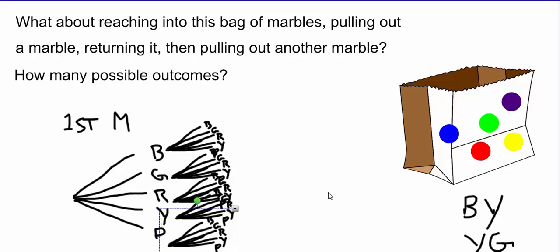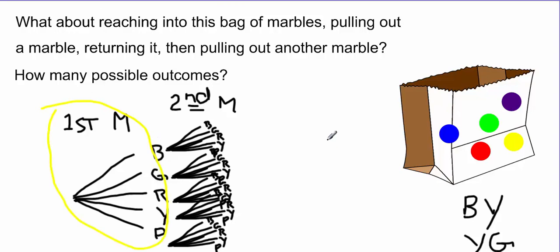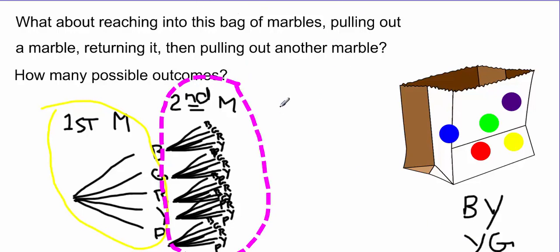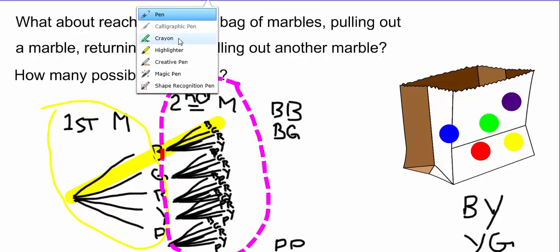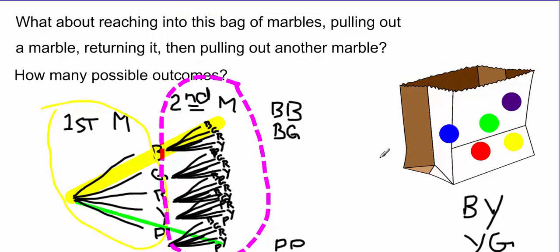Now we can see the total number of possibilities for pulling two marbles. The first level represents the first simple event, the second level represents the second simple event. By the time we've created that tree, we have a big list of all the possibilities — blue-blue, blue-green, blue-red, blue-yellow, blue-purple, and so on all the way down to purple-purple. If we listed all of those, we would see that there are 25 possibilities or 25 outcomes.